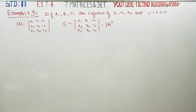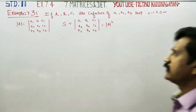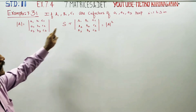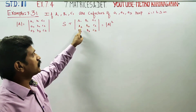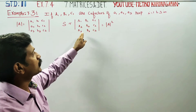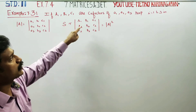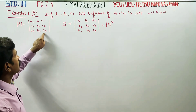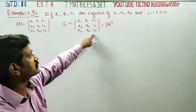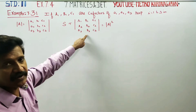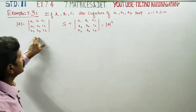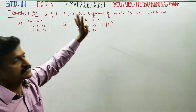Dear Learn Standard Students, in Example 7.31, small a1, b1, c1 are elements, and capital A1, B1, C1, A2, B2, C2 are the corresponding cofactors. The cofactor of element a1 is capital A1, the cofactor of small c3 is capital C3, and the cofactor of small b3 is capital B3. These are the elements and these are their corresponding cofactors.